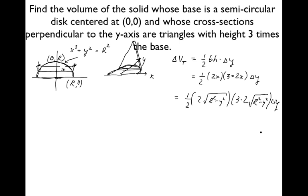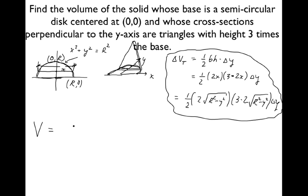So there's the volume of our typical triangular tile: one-half base — the base is 2x — the height is 3 times that, times delta y. Then the volume of the solid will be the integral from 0 to capital R. We can simplify: the 2's go away, this will be 6, and the square root times square root gives just what's inside. So it becomes 6 times (R² minus y²) dy.